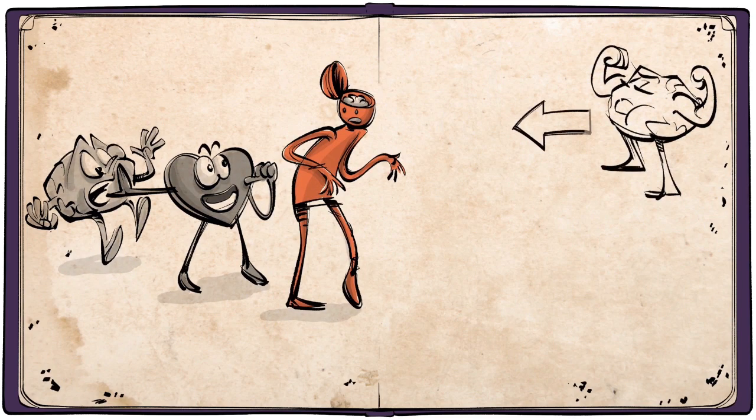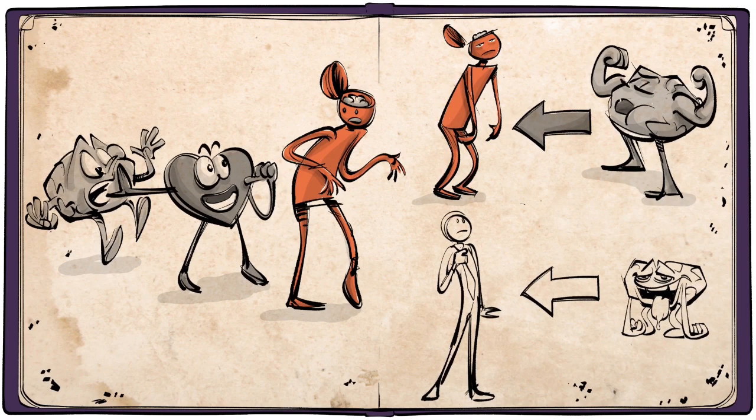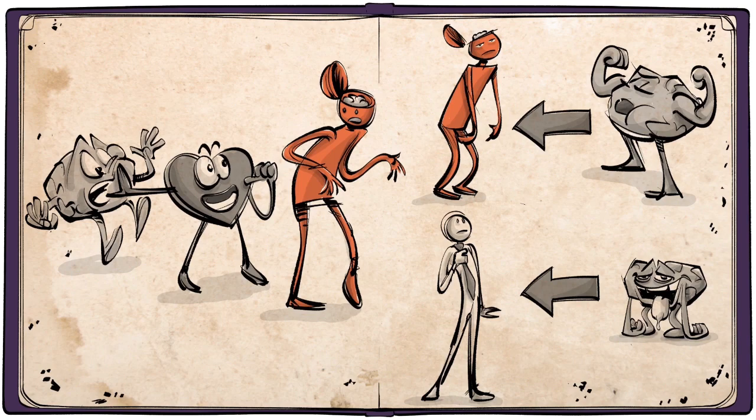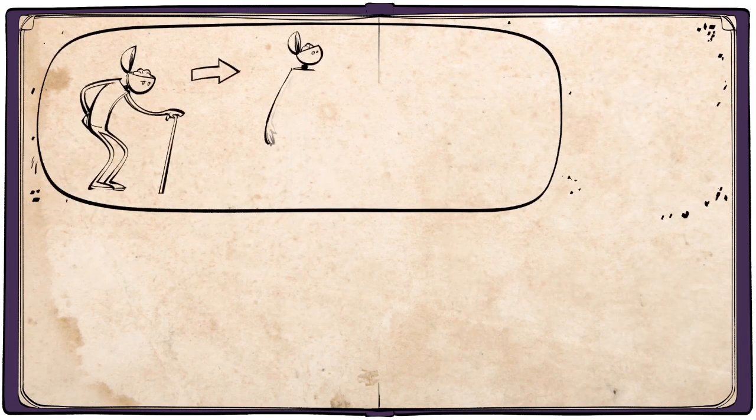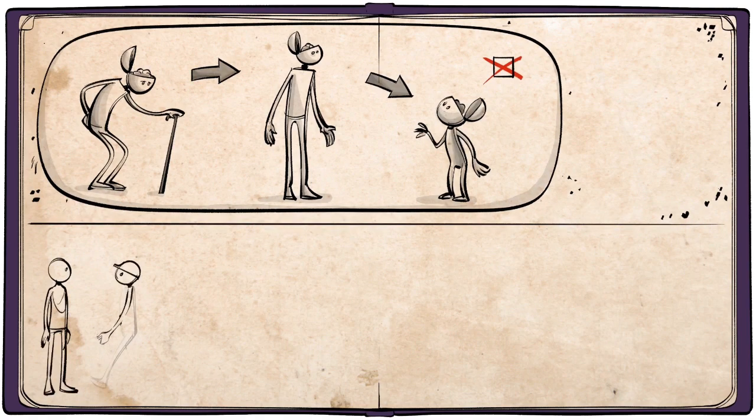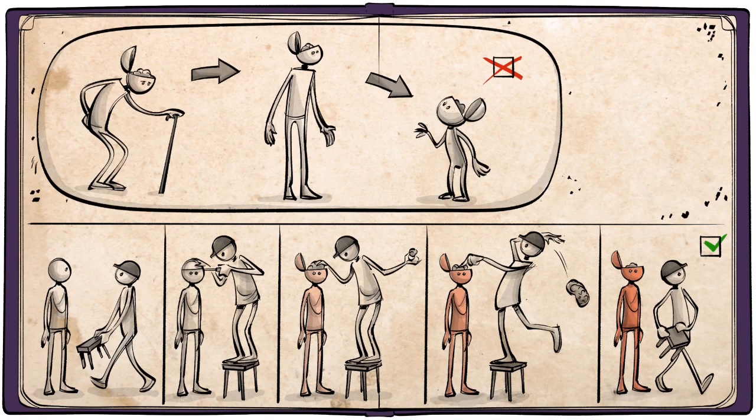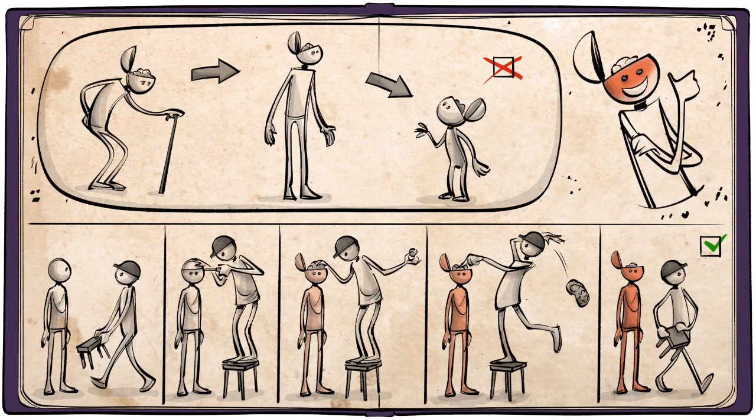There are human beings who are remarkably agile intellectually, yet stupid, and others who are intellectually dull, yet anything but stupid. The impression one gains is not so much that stupidity is a congenital defect, but that, under certain circumstances, people are made stupid, or rather, they allow this to happen to them.